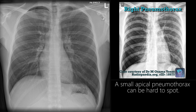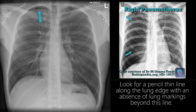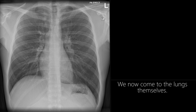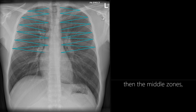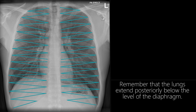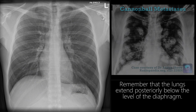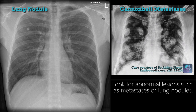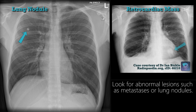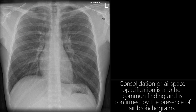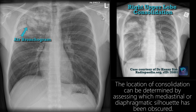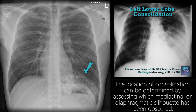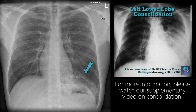A small apical pneumothorax can be hard to spot. Look for a pencil-thin line along the lung edge, with an absence of lung markings beyond this line. We now come to the lungs themselves. It is crucial to compare the bronchovascular markings on one side to the other. Compare the upper zones, then the middle zones, and then the lower zones. Remember that the lungs extend posteriorly below the level of the diaphragm. Look for abnormal lesions such as metastases or lung nodules. Consolidation or airspace opacification is another common finding, confirmed by the presence of air bronchograms. The location of consolidation can be determined by assessing which mediastinal or diaphragmatic silhouette has been obscured. For more information, please watch our supplementary video on consolidation.